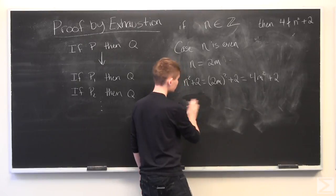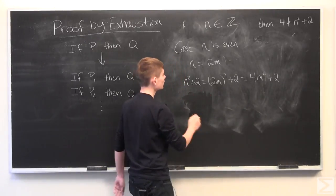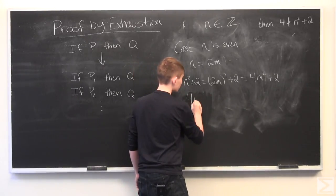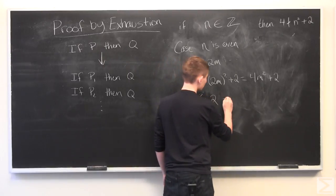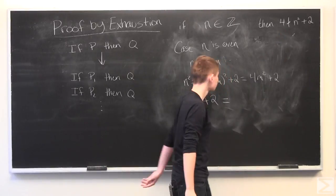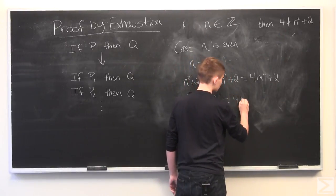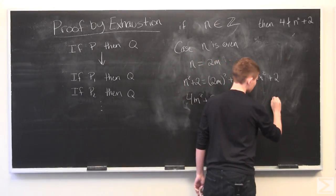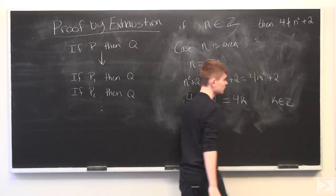Oh, no, just kidding, not there yet. And so we have 4M squared plus 2 is equal to some multiple of 4. So we'll just say 4 times some K, where K is also an integer.